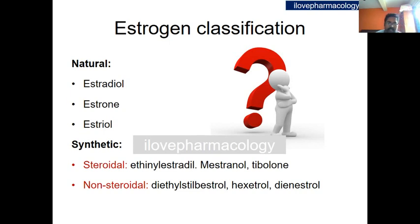Coming to the estrogen classification, it can be classified into natural as well as synthetic. Natural estrogens include estradiol, estrone, and estriol. Estradiol gets converted in the liver via oxidation to estrone, and from estrone via hydroxylation it gets converted to estriol.